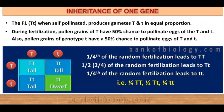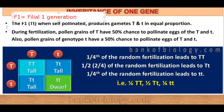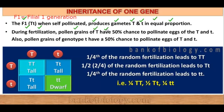Let us now summarize what we have seen in the inheritance of one gene. The F1 generation, when self-pollinated, produces gametes capital T and small t in equal proportions. During fertilization, the pollen grains of capital T have a 50% chance to pollinate eggs of capital T and small t. Similarly, pollen grains of genotype small t also have a 50% chance to pollinate eggs of capital T and small t.